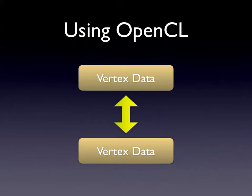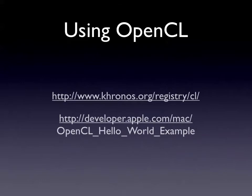With OpenCL you also have the advantage that you can go backwards and forwards, so you don't necessarily have to have two vertex buffer objects. You can actually work within the same buffer, and that way you don't have a performance overhead with all the copying.